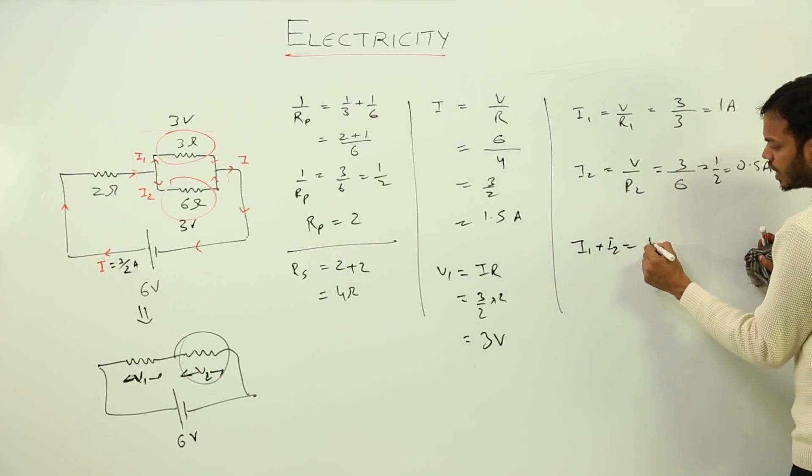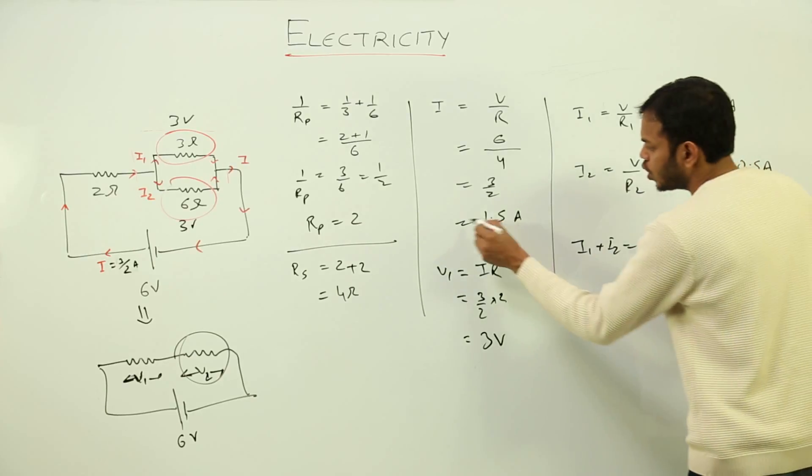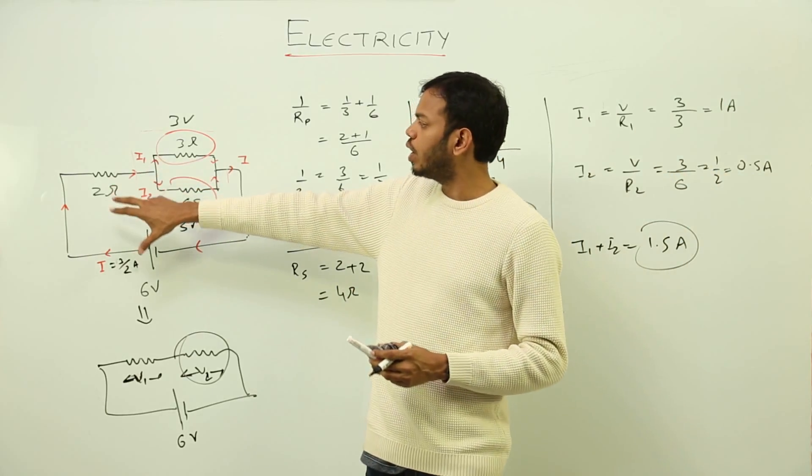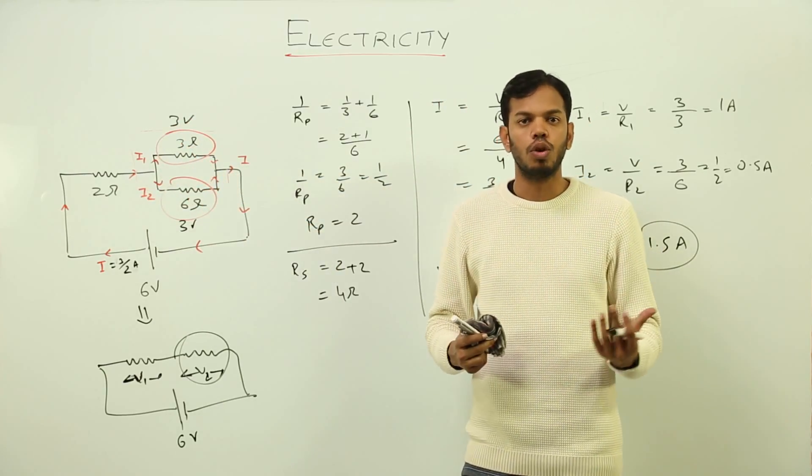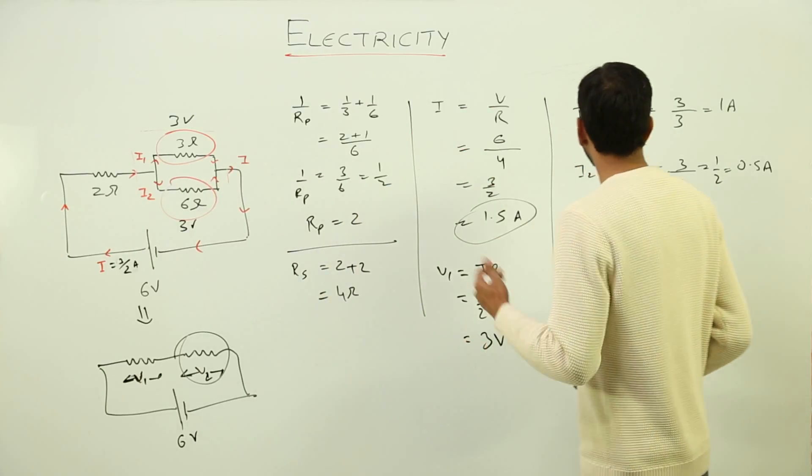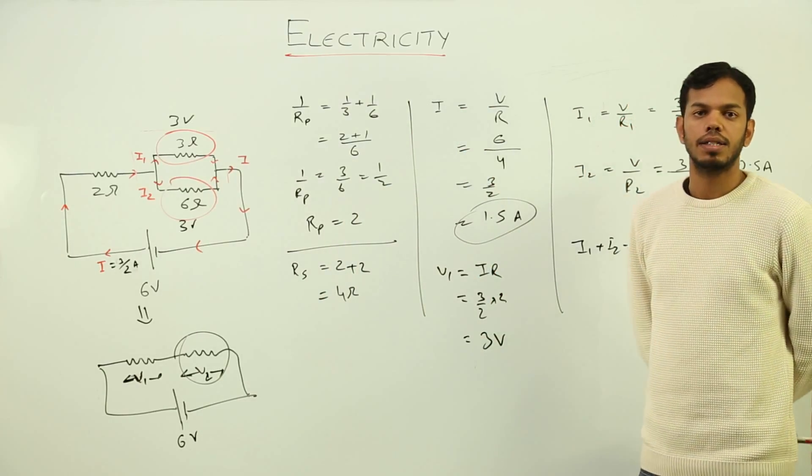We have already solved this numerical. I wanted to calculate the value of I1; I've got the value of I1. I want to tell you another thing: what is I1 plus I2? This is 1 plus 0.5, which is 1.5 amperes. And what was the total current? 1.5 amperes. So total current will always get bifurcated into two parts or three parts or four parts, but the total sum will be exactly the same as the main current. This is how we solve series and parallel circuits.